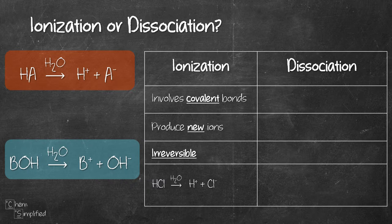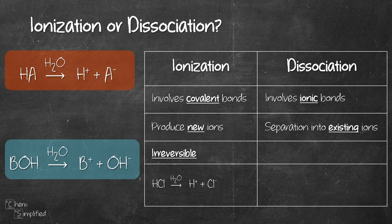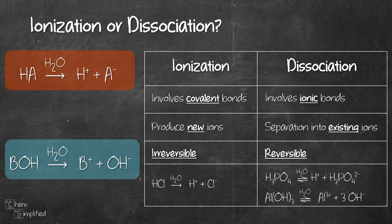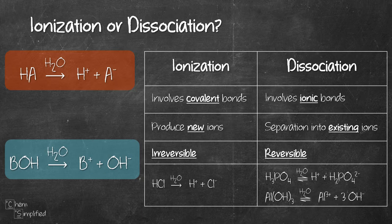If the acid or base is an ionic compound, it separates into existing ions and that is called dissociation. This process is reversible, meaning it can go forward or backward. An example for acid is dissociation of H3PO4 and for base it's AlOH3.